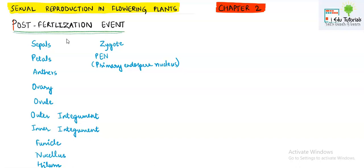We will see one by one what happens to each of these terms after fertilization or post fertilization. Sepals have done their job, so they will fall off. Similarly, petals will be of no use and will also fall off. Anthers will be of no use and will also fall off. The ovary — very importantly — forms the fruit after fertilization. So the ripened or fertilized ovary is known as fruit, and the ovules inside the ovary are known as seeds once fertilization is done. So the ovule transforms into the seed.